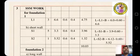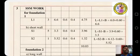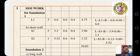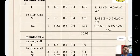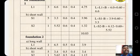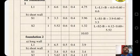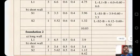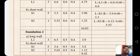Third item: SSM work for foundation. Long wall L1 — 3 numbers, length = 6 + 0.6 = 6.6 meter. 6.6 × 0.6 × 0.4 = 4.75. Short wall S1 — 5 numbers, 3.9 minus 0.6 = 3.3 meter length; 5 × 3.3 × 0.6 × 0.4 = 3.96. S2 — 1 number, S2 = 6.12 minus 0.6 = 5.52; 5.52 × 0.6 × 0.4 = 1.32. Total quantity of first step SSM = 10.03 cubic meters.